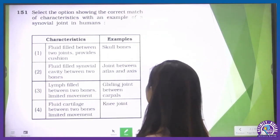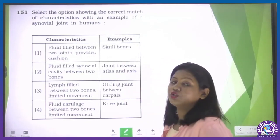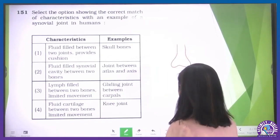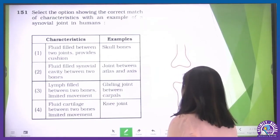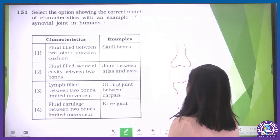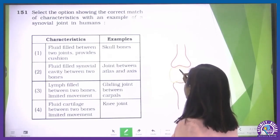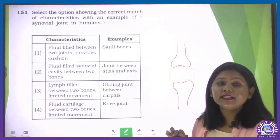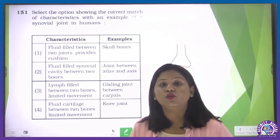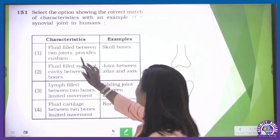Select the option showing the correct match of characteristic with an example of synovial joint in human. We know that synovial joint — between two bones, at the endings of two bones, a cavity is formed which acts as a cushion, and inside it is synovial fluid that acts as a lubricant. This prevents friction so that there is no calcium loss or fiber loss.